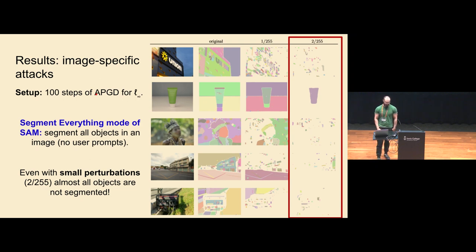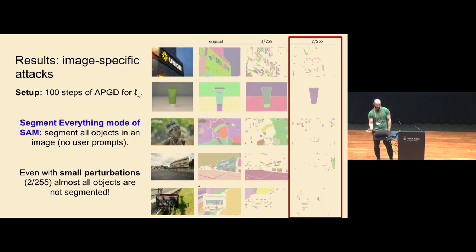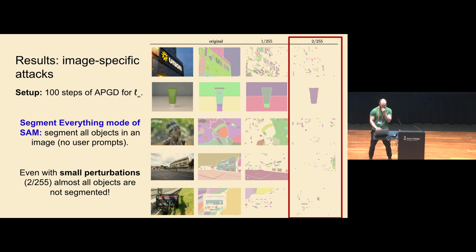The method is pretty simple. We solve this problem with projected gradient descent using standard methods. We do L-infinity with 100 steps, because we want to keep this computationally cheap. The first task we explore is the segment everything mode of SAM — given an image, we want to segment every object inside it, and the prompts are constructed inside the model itself automatically.